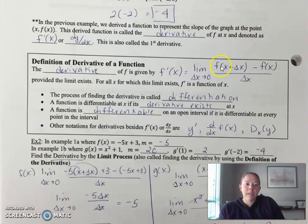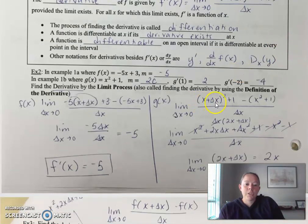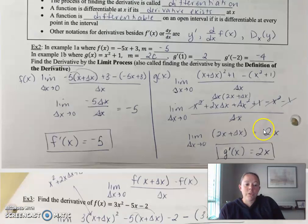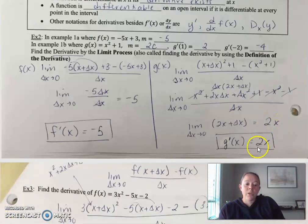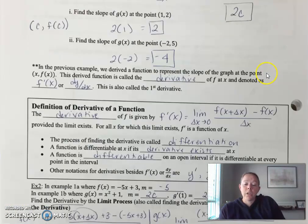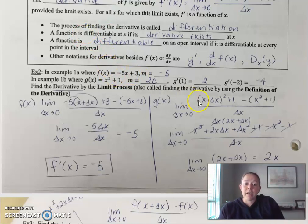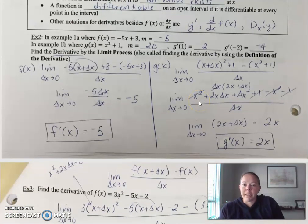You get the same negative 5 we got earlier with the limit process. And with g(x), same idea — plug in (x + Δx) and then f(x). So (x + Δx)² + 1 minus (x² + 1), all over Δx. If you reduce this, you get 2x. Notice 2x looks very familiar — earlier we got 2C. The limit process at a specific point gives the same answer as the general derivative formula.